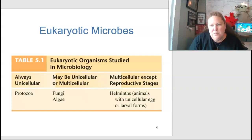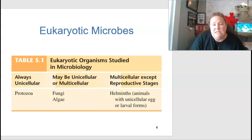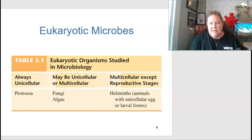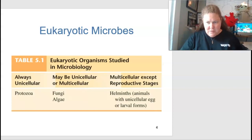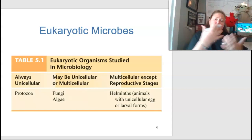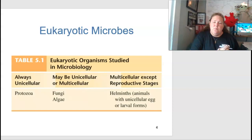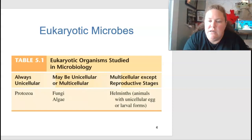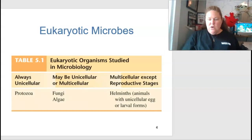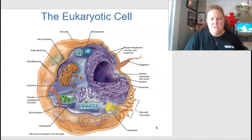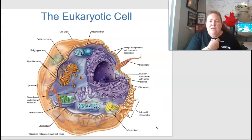Looking at eukaryotic microbes, the ones that are always unicellular are your protozoans. Fungi and algae can be unicellular or multicellular depending on the subspecies. Multicellular organisms are multiple cells except in their reproductive stages — for example, an egg is only one cell, but forms a zygote by joining with sperm. Examples include helminths, which have unicellular eggs or larval forms.